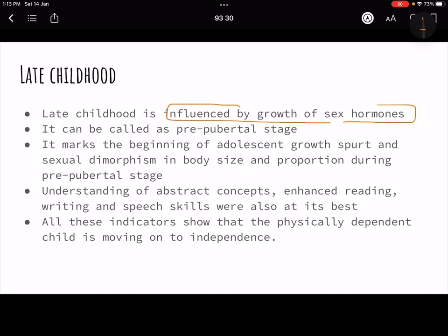Then comes your late childhood. It is influenced by growth of sex hormones. So this can also be called as pre-pubertal stage. This is 9 to 12 years, or you can just say 10 to 12 years. This is pre-pubertal stage and your growth of sex hormone starts. It marks the beginning of adolescent growth spurt. Sexual dimorphism in body size and proportion during the pre-pubertal stage. Now, what is sexual dimorphism? Very important term.